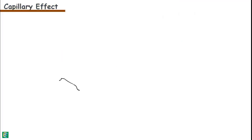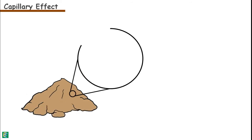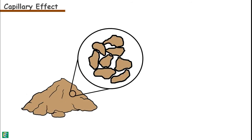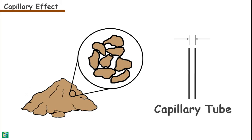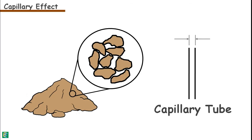To understand the capillary effect in soils, we can compare the voids present between the soil grains with very small diameter glass tubes called capillary tubes. These voids are interconnected and form a channel of tube-like structure comparable to capillary tubes. Although the channels formed by these interconnected soil pores are not circular in cross-section like the capillary tube, the comparison is still useful to understand the phenomenon of water rise in soils against gravity.